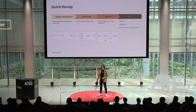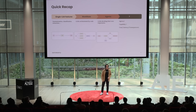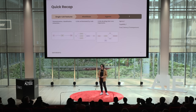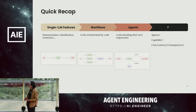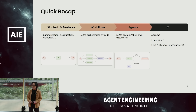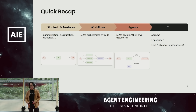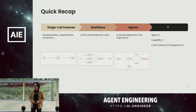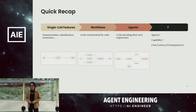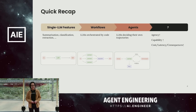We believe this is the beginning of agentic systems. Now, models are even more capable, and we're seeing more and more domain-specific agents start to pop up in production. Unlike workflows, agents can decide their own trajectory and operate almost independently based on environment feedback. This is going to be our focus today.